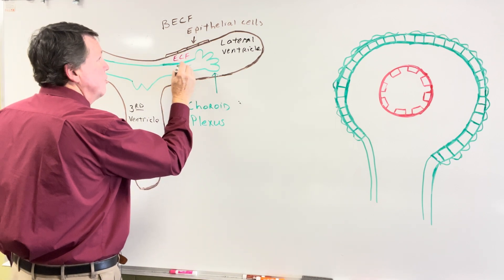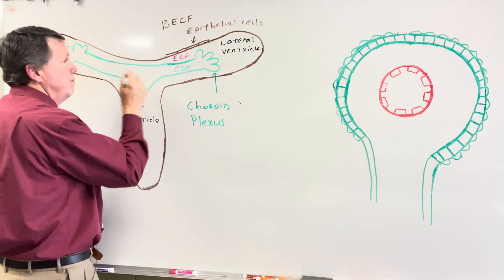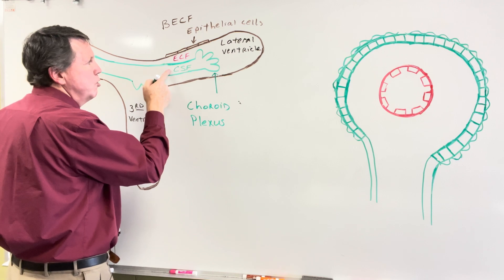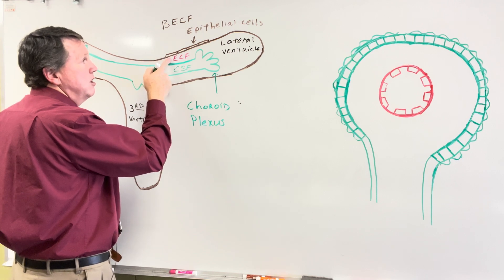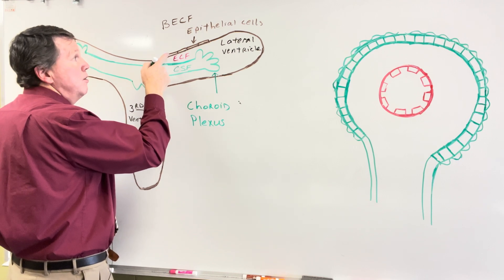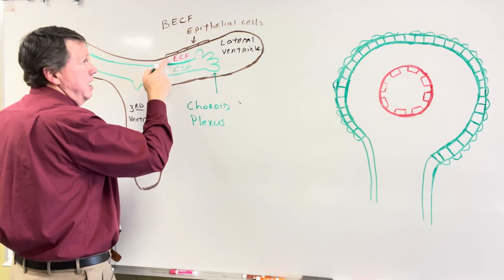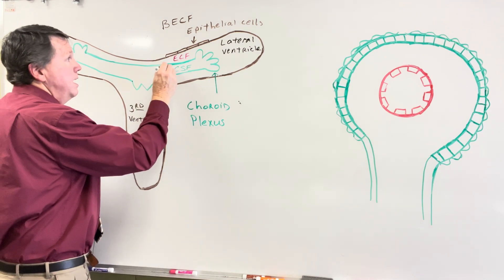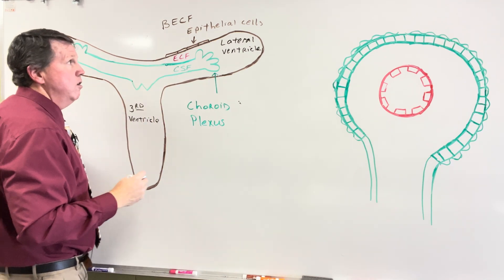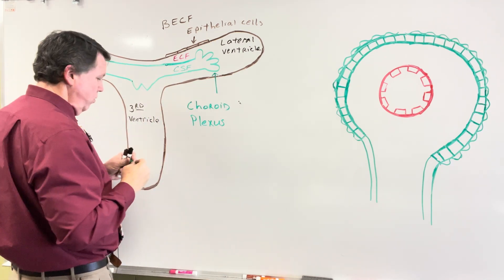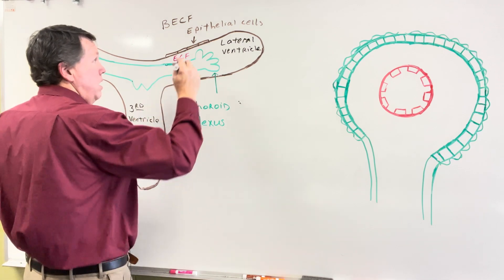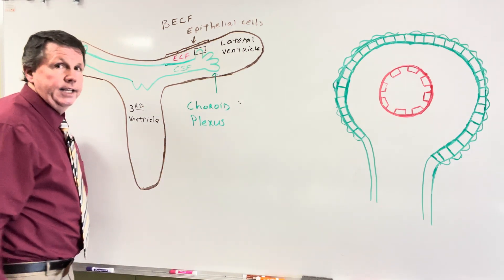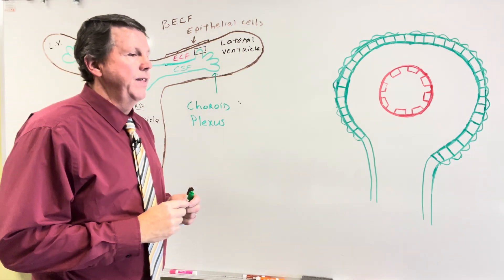In here we're going to make our cerebrospinal fluid. This membrane goes around here and separates the cerebrospinal fluid from the extracellular fluid. This membrane here separates the extracellular fluid from the brain extracellular fluid. So we're separating all of this out. Now we're going to take a zoomed-in view of this portion.